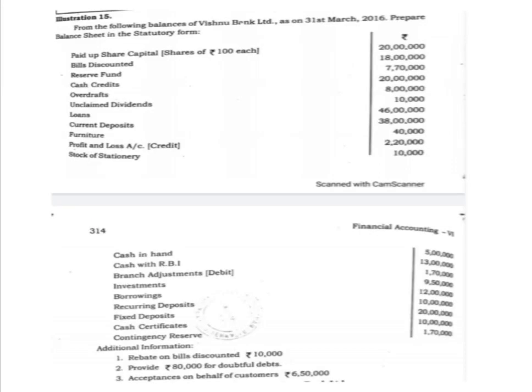I will read the question now. From the following balances of Vishnu Bank Limited as on 31st March 2016, prepare balance sheet in the statutory form. Paid up share capital, shares of Rs. 100 each: 20 lakh. Bills discounted: 18 lakh. Reserve fund: 7 lakh 70,000. Cash credits: 20 lakh. Overdrafts: 8 lakh. Unclaimed dividends: 4 lakh. Loans: 46 lakh.